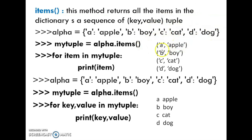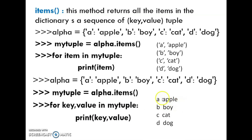Alpha is equal to: a-apple, b-boy, c-cat, d-dog. My tuple is equal to alpha.items. For key, value in my_tuple: print key, value. The output is: a-apple, b-boy, c-cat, d-dog.